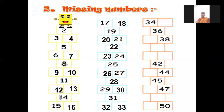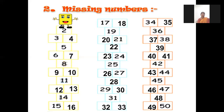Now we will write 35. 36 is written, so we will write 37. 38 is written, we will write 39, 40, 41, 42. What will come after 42? 43, 44, 45. What will come after 45? 46, 47. What will come now? 48, 49, 50. We have to do like this for missing numbers — just practice at home.